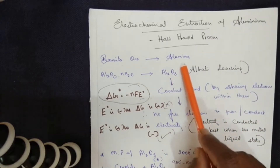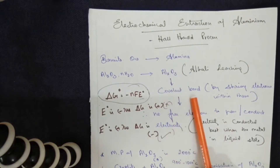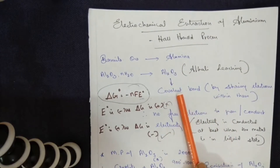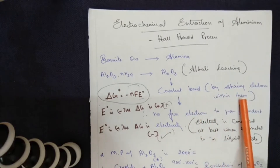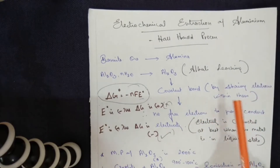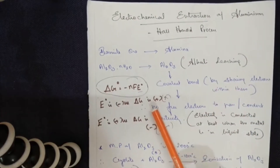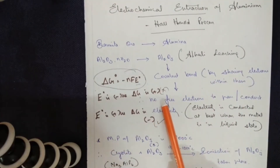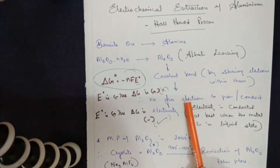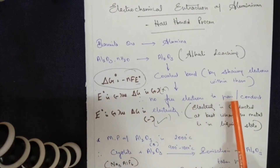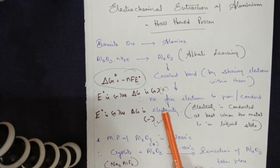The type of bond found within the alumina molecule is a covalent bond. A covalent bond is formed by sharing electrons within the molecule. When electrons are shared within the molecule, there will not be free electrons available. If free electrons are not available, passing or conducting electricity is not possible.